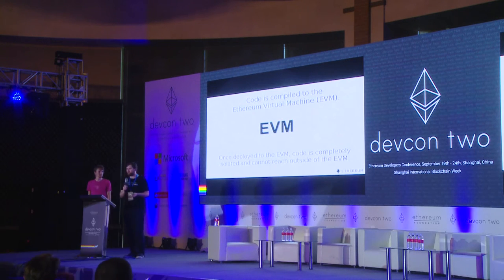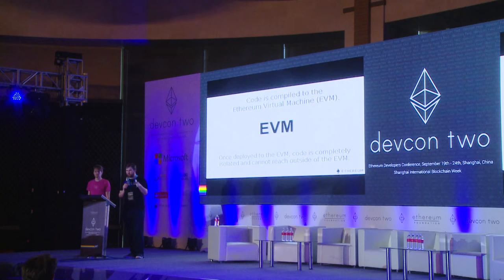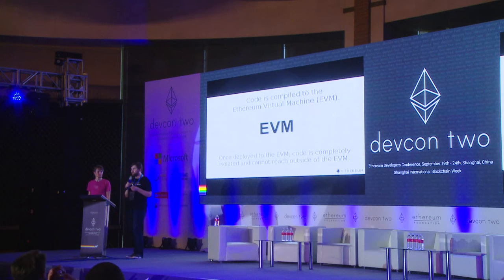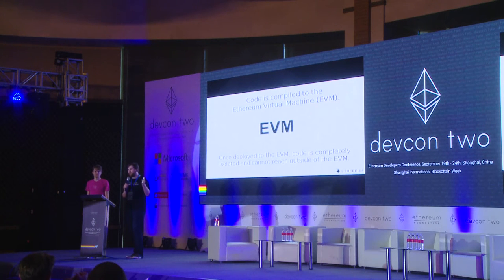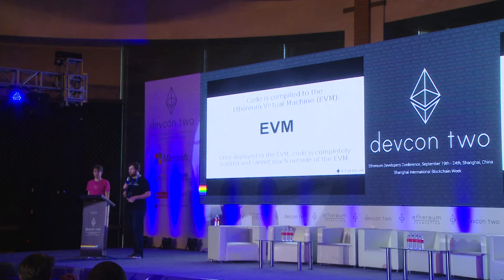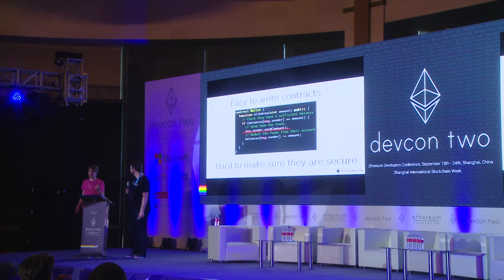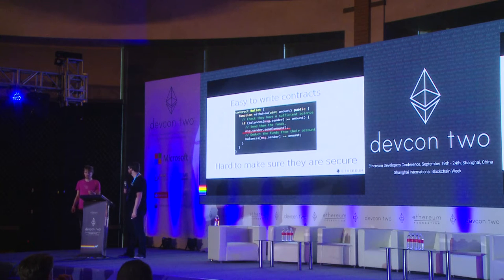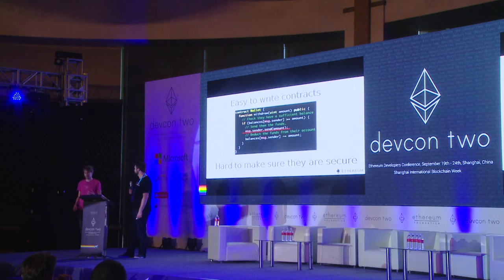The code is compiled to the Ethereum Virtual Machine — it takes the human readable code and puts it into ones and zeros so that the Ethereum network can read it in a way the computer can understand. Once it's on the EVM, it's completely isolated. Contract code on the Ethereum network can't do things like ping weather.com and get the latest weather — it requires a human intermediary because there's no outside network or other types of connections. Everything that executes in the EVM has to be completely deterministic, which is why you can't generate random numbers easily inside the EVM without some outside interaction.